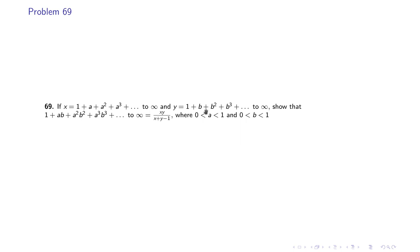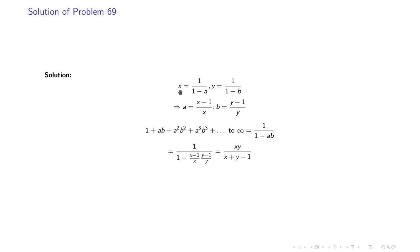Problem 69: If x = 1 + a + a² + ... and y = 1 + b + b² + ... (where 0 < a < 1 and 0 < b < 1), prove that 1 + ab + a²b² + ... = xy/(x + y − 1). From the infinite GP formula, x = 1/(1−a) and y = 1/(1−b), giving a = (x−1)/x and b = (y−1)/y. The series 1 + ab + a²b² + ... sums to 1/(1−ab). Substituting the expressions for a and b yields xy/(x + y − 1).